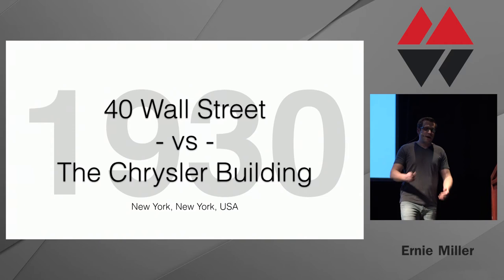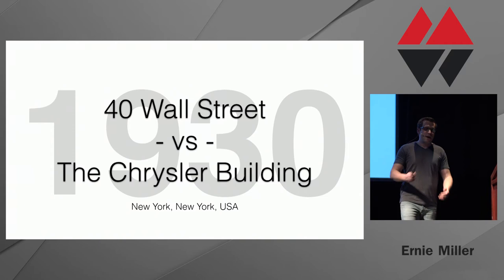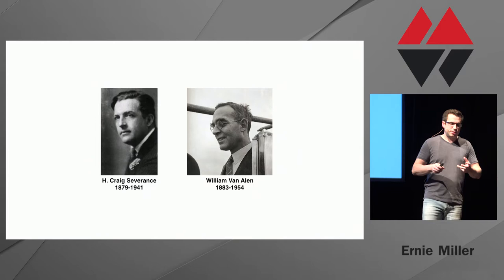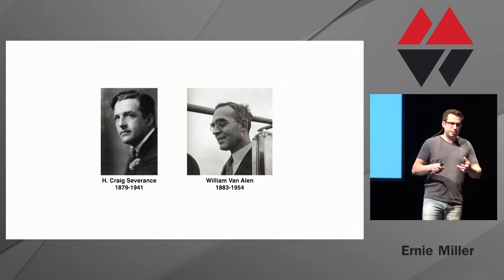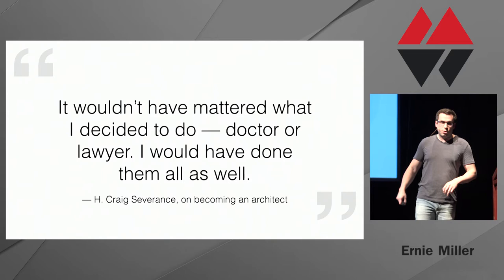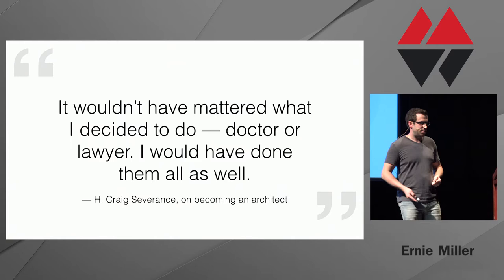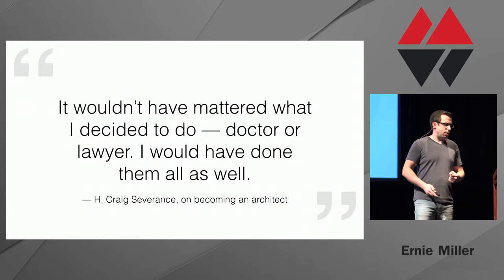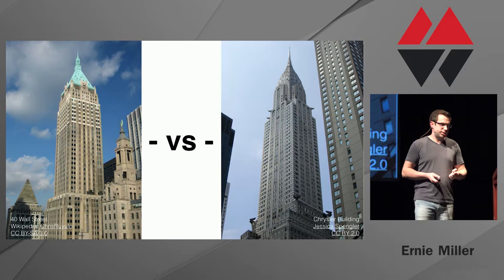Now we have a twofer — two skyscrapers: 40 Wall Street and the Chrysler Building, both in New York. H. Craig Severance and William Van Allen were once partners. Van Allen preferred to spend his time with other architects discussing the finer points of design — artistic, much like Root. Severance spent his time with business folks drumming up sales, and humility was not his strong point. He had no particular passion for architecture as art. When Van Allen got all the credit for intricate designs they were jointly responsible for, Severance didn't take it well, and their partnership ended badly. Soon they found themselves in competition — Severance was commissioned to design 40 Wall Street, while Van Allen was commissioned to design the Chrysler Building.